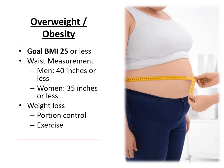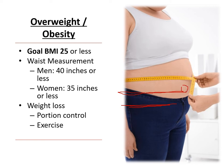Being overweight is also a risk factor for developing heart disease. We can look at body mass index or waist measurement. Men, if you have a waist measurement at the belly button of 40 inches or less, you're less likely to develop heart disease; more than 40 inches means higher risk. Women, 35 inches or less is a healthy range; over 35 inches is unhealthy. We measure around the belly button area, not the pants size.